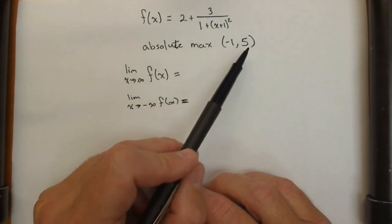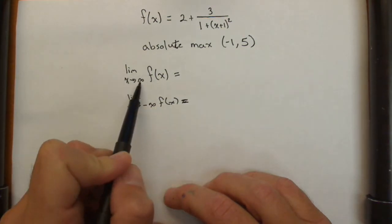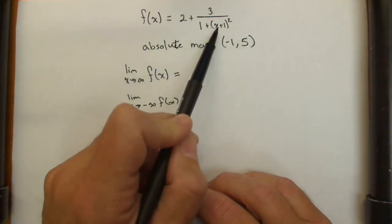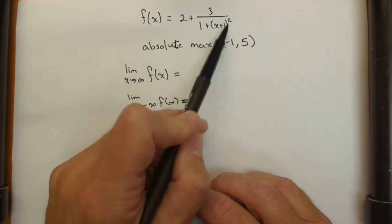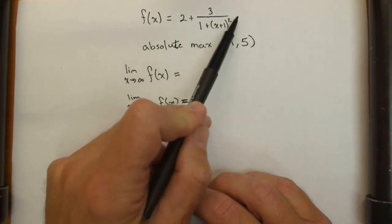At the point (-1, 5). So the limit as x goes to infinity of f(x)—well, if x goes to infinity, this whole piece goes to infinity, which means the whole denominator goes to infinity.